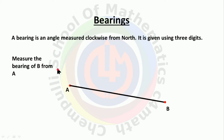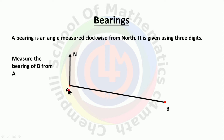The question says measure the bearing of B from A. 'From A' means we need to measure the angle at A. So at A, draw one north direction — taking the upward direction as north. In bearing, there are two angles: clockwise and anti-clockwise, but in bearing we use the clockwise angle.